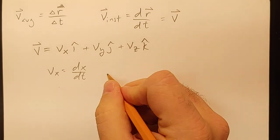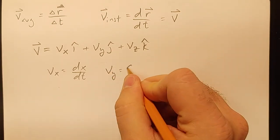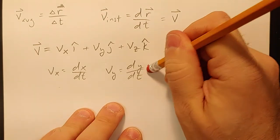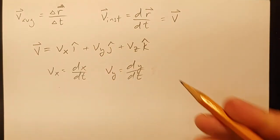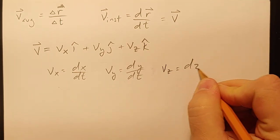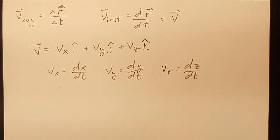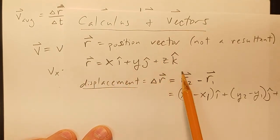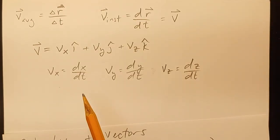vy is just the derivative of y with respect to time, and vz is just the derivative of z with respect to time. So it's nothing new. It's just now, since we've got three components to our position, you have to take three derivatives in order to get your velocity.